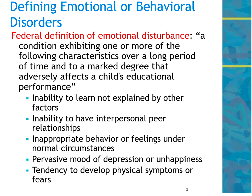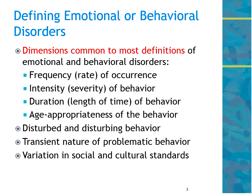As we continue with our definition, most of the definitions we find have some very common pieces. We always look at the frequency or rate of occurrence, the intensity of the behavior, the duration of the behavior, and the age appropriateness of the behavior. We also look at behaviors that are either disturbing to us or disturbed in light of the student. We consider the transient nature of problematic behavior — does it happen in one place or several? — and variation in cultural and social standards.